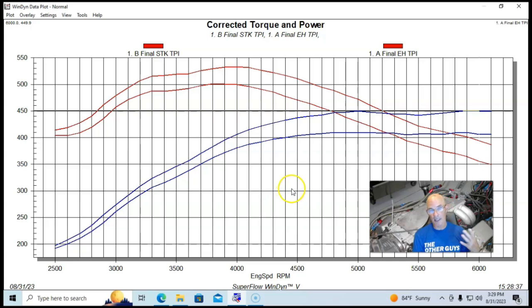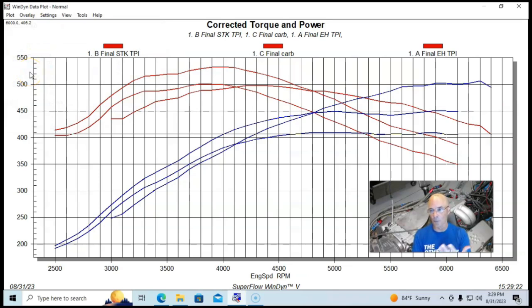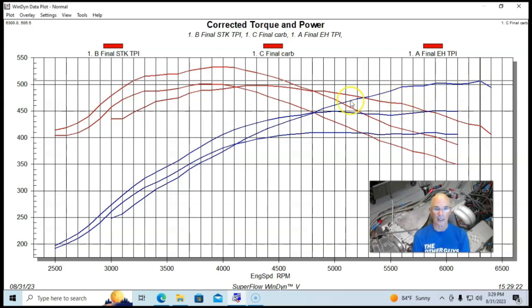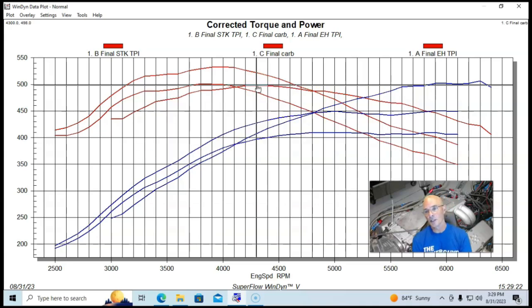To give you an idea what kind of power this 383 was capable of, even with a dual-plane Performer RPM, this thing was 506 horsepower. But peak torque was down compared to the tune port stuff at 498 foot-pounds. The dual-plane intake manifold just shifted the power curve. But what I was most excited about is how much torque the tune port stuff made down low.